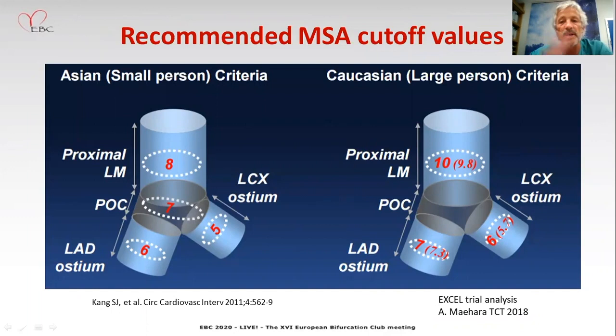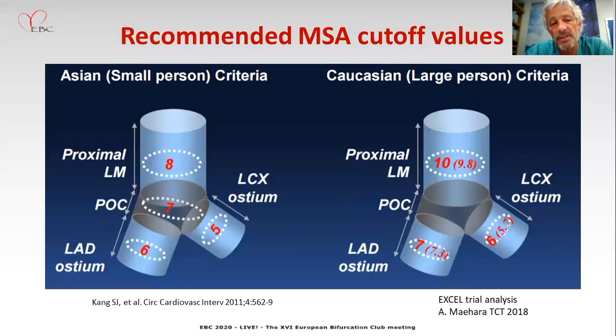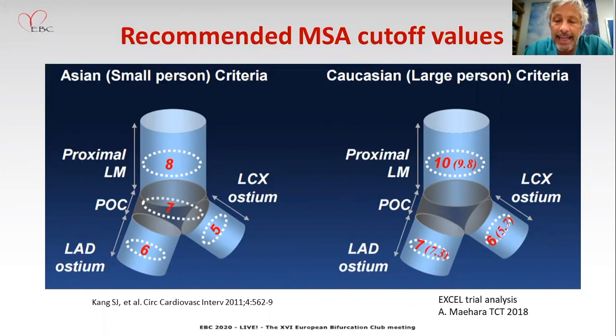The recommended cut-off values are a general recommendation coming from two different studies. The first is from Korean studies showing that the cut-off values to predict restenosis are 5, 6, 7, and 8 mm² respectively for circumflex ostium, LAD ostium, the POC, and the proximal left main. From the Excel trial, conducted in a Caucasian and larger body-size population, the cut-off values are a bit larger, with 6 mm² in circumflex, 7 mm² in LAD, and 10 mm² in the left main. However, these should be relative to the anatomy, to the left main size, and indirectly to the body size of the patient.